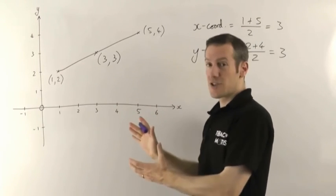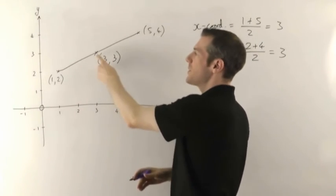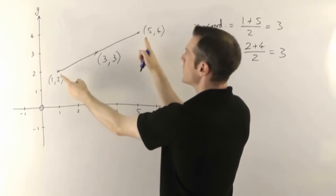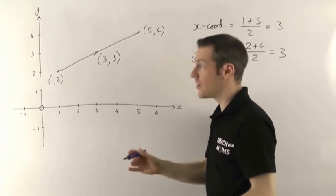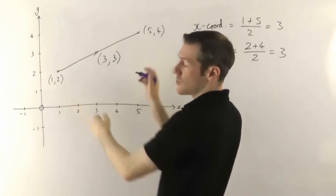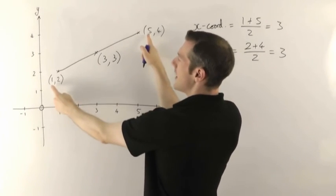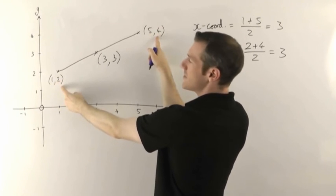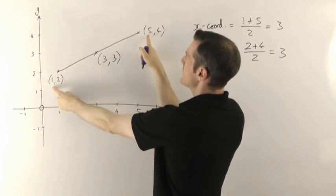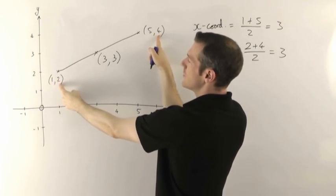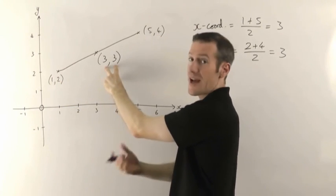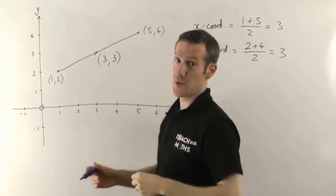So just quickly to summarize, in order to find the midpoint if you've been given a line, work out the coordinates of either end of the line first, or if you've just been given two coordinates that's great, it's easy that way. Effectively you find the average x coordinate and the average y coordinate. You take the average of these two points and the average of those two coordinates and those give you the x and the y coordinates of your midpoint.